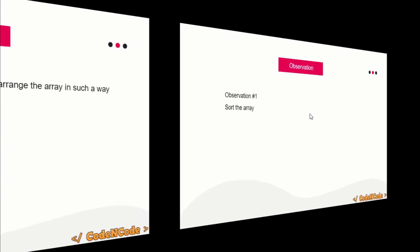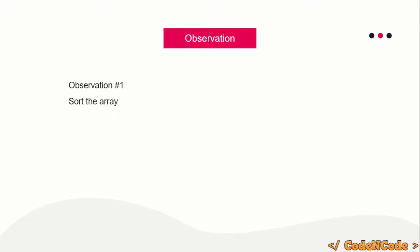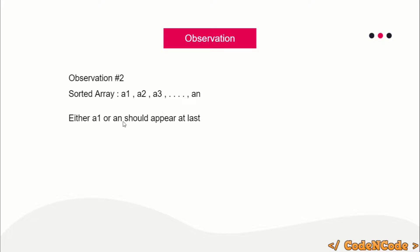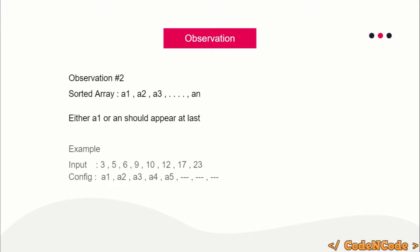So how will we solve the problem? First, we'll sort the array. After sorting, the key observation is that either a_1 or a_n — the first or the last element — should appear at the last position of your arrangement, no matter what arrangement you choose. Either the first element will appear at the last of your configuration, or the last element will appear at the last.